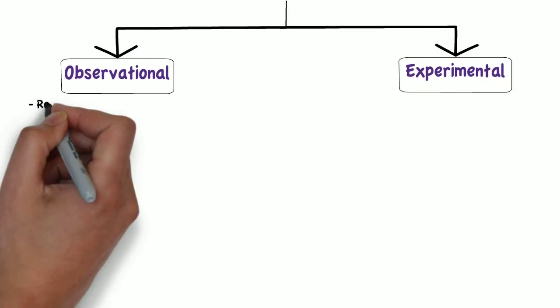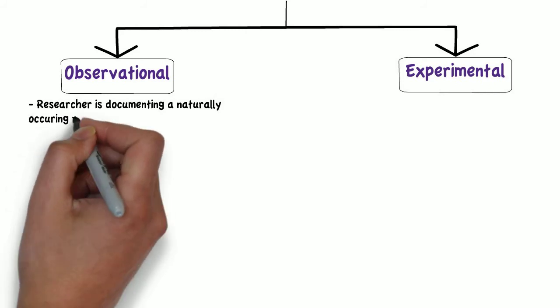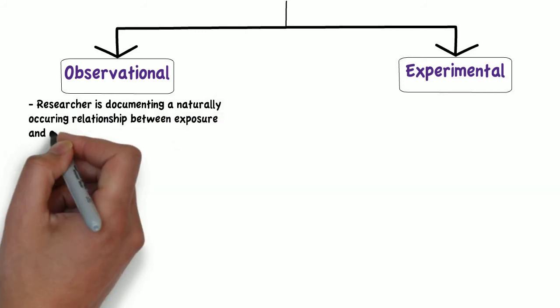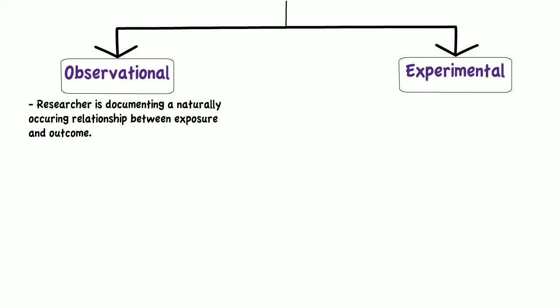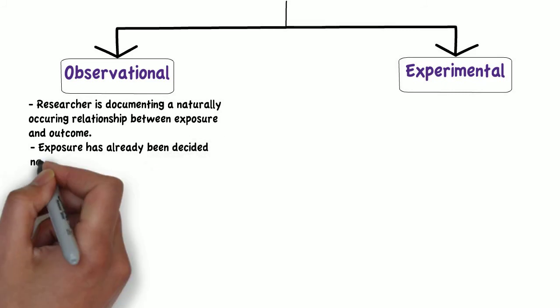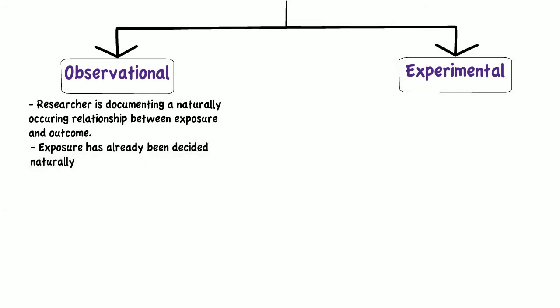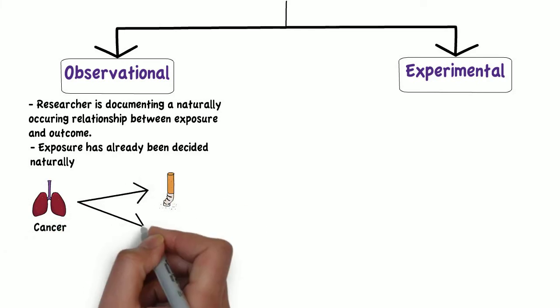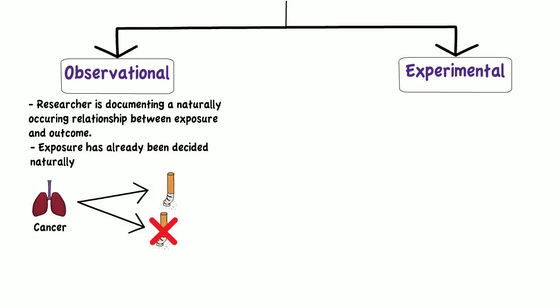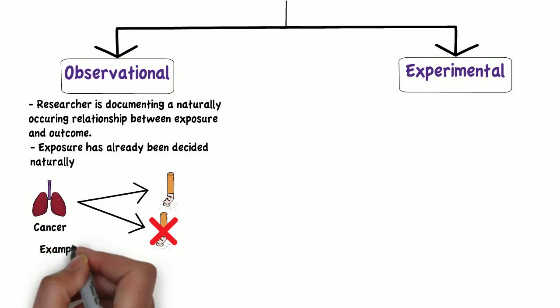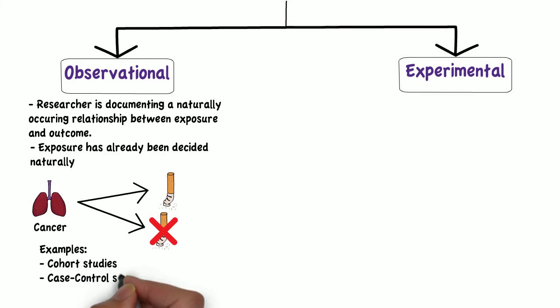Observational studies are those where the researcher is merely documenting a naturally occurring relationship between an exposure and the outcome. The researcher does not intervene in any individual and the exposure has already been decided naturally. For example, looking at the incidence of lung cancer in smokers versus non-smokers would be an observational study. Examples include cohort studies and case control studies, and cross-sectional studies can also be analytical.